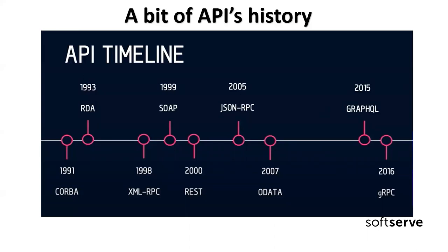Let's talk a bit about the history of APIs. We have this picture and the dates may not be very precise, but they demonstrate well the main time periods of API evolution. In 1991, we got a method called the Common Object Request Broker Architecture, CORBA — the first something like RPC, though not RPC as we think about it today.